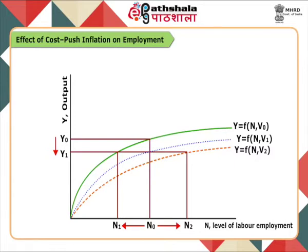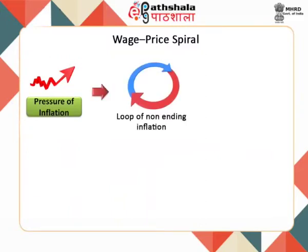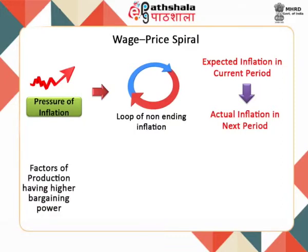Once an economy comes under the pressure of inflation, it gets trapped into a loop of non-ending inflation. Inflation starts working as a self-fulfilling prophecy — expected inflation in the current period turns out to be actual inflation in the next period. The process through which this happens is known as wage-price spiral. Wage-price spiral is a phenomenon which turns expected inflation into actual inflation.